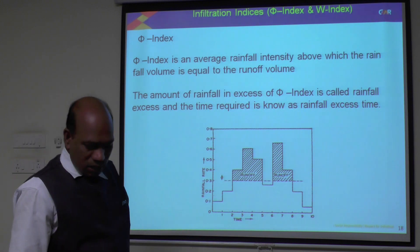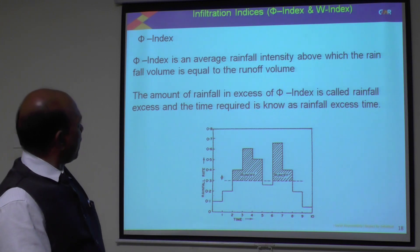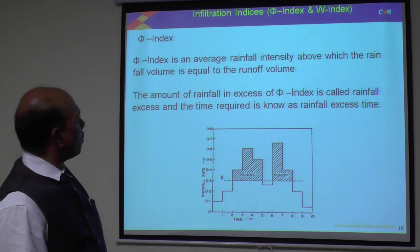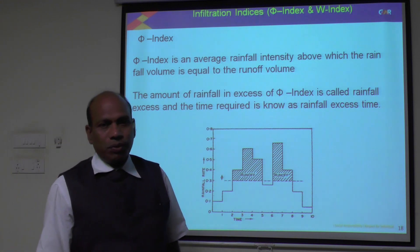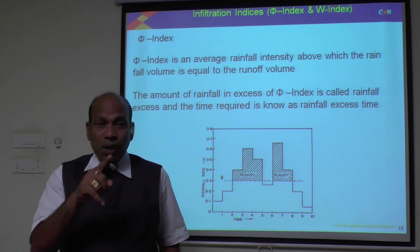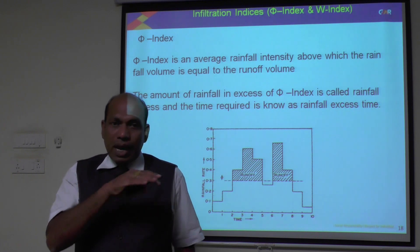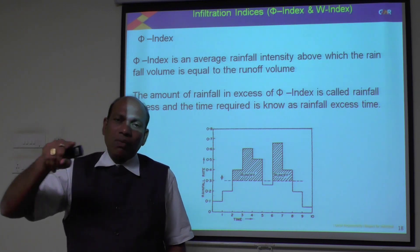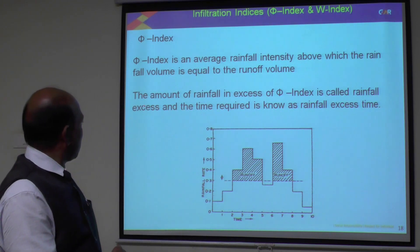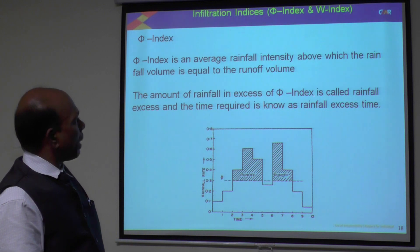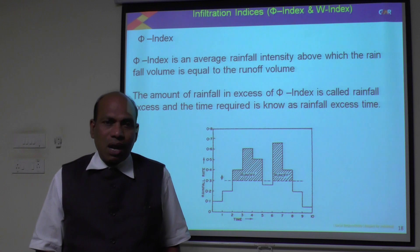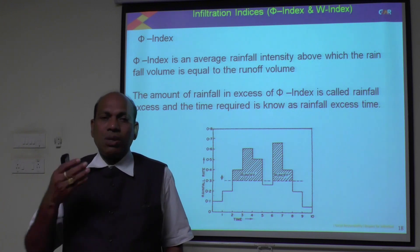The phi (π) index is an average rainfall intensity above which the rainfall volume is equal to the runoff volume. Above the phi index line, the rainfall volume equals the runoff volume. The amount of rainfall in excess of the phi index is called the rainfall excess, and the corresponding duration is called the rainfall excess duration.